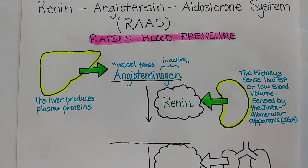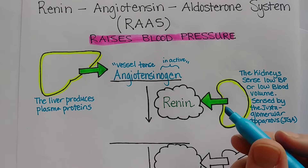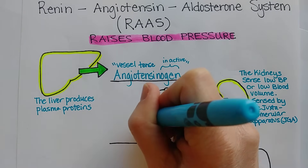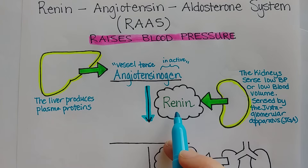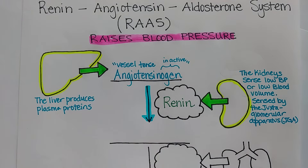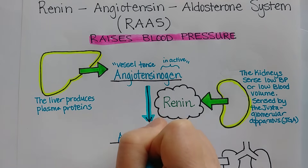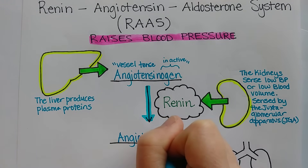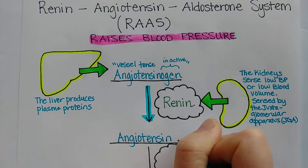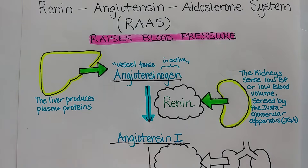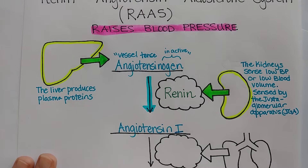Angiotensinogen is converted by the enzyme renin into angiotensin 1. And angiotensin 1 is not very active — it really needs a little bit more adjustment by yet another enzyme.